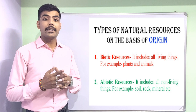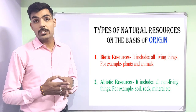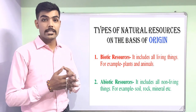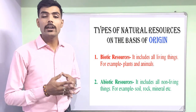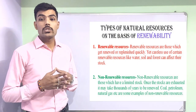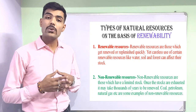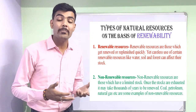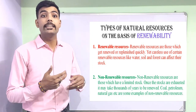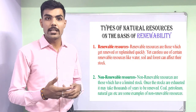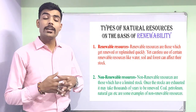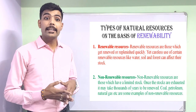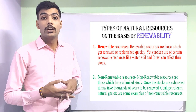Natural resources are further divided on the basis of origin into biotic and abiotic. Biotic consists of living organisms, whereas abiotic consists of non-living things. The third classification is on the basis of exhaustibility: renewable and non-renewable resources. Renewable resources get replenished easily and quickly — they take less time to renew themselves and are non-exhaustible. Non-renewable resources, on the other hand, are exhaustible in nature because they cannot renew themselves, or they may take thousands of years to renew.